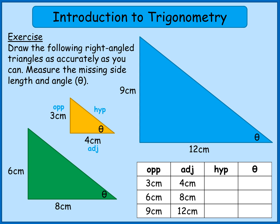Okay, welcome back. Hopefully you've had a go at doing those yourself, but if you haven't I've got the answers for you anyway. You should have found that the yellow-orange triangle has a hypotenuse of five centimetres and the angle is about 37 degrees. The green one has a hypotenuse of 10 centimetres and again the angle is about 37 degrees. So the angle in each case has come out the same — 37 degrees.